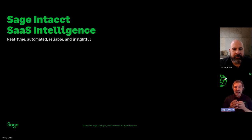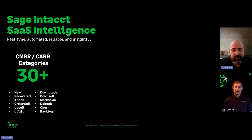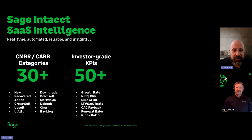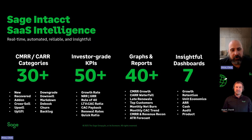Chris is now going to make the product come alive and talk about the different metrics you can collect for yourself. Thanks, David. Today we're going to talk about SaaS Intelligence — it's a fully automated SaaS metric tracking application built directly in Sage Intacct. It categorizes your recurring revenue activity within your customer subscription base into over 30 categories of recurring revenue, not just the typical four you might see in spreadsheets or other systems. This depth of recurring revenue activity enables the application to produce over 50 investor-grade KPIs, 40-plus reports and graphs across seven insightful dashboards.